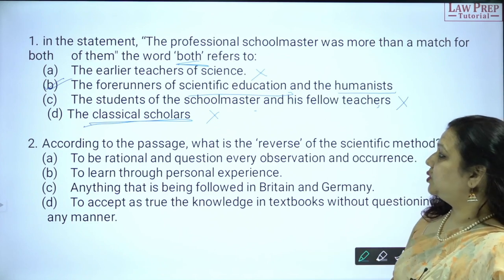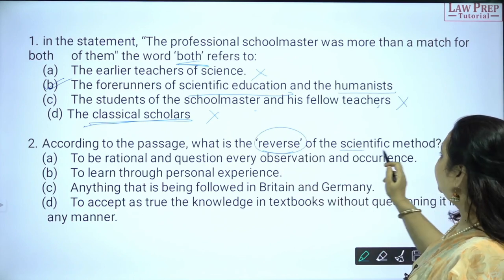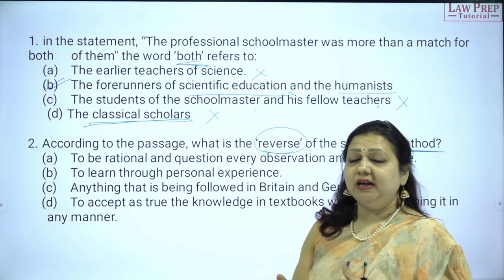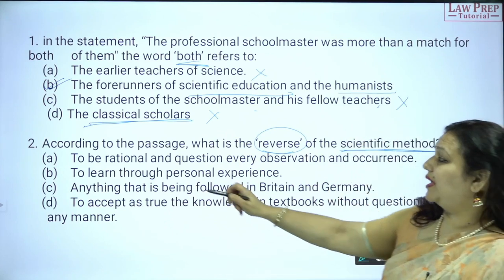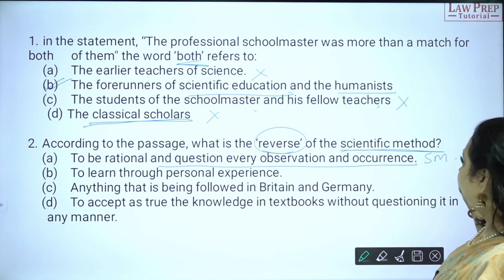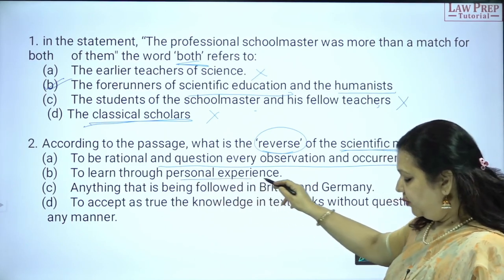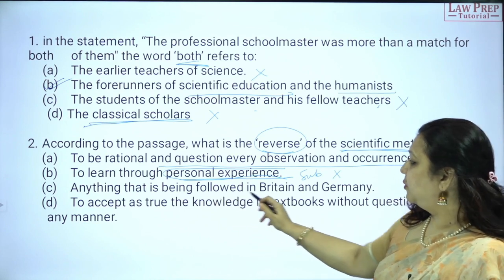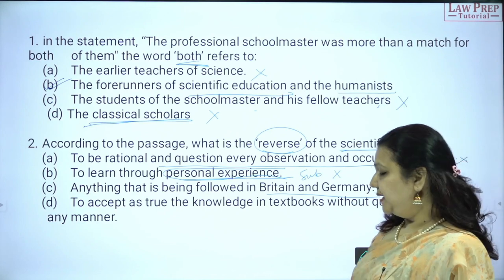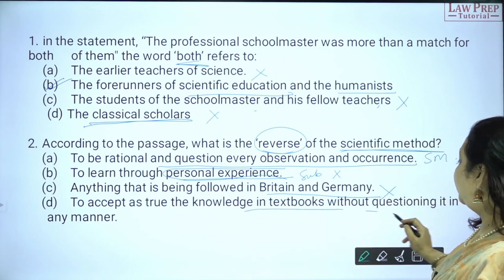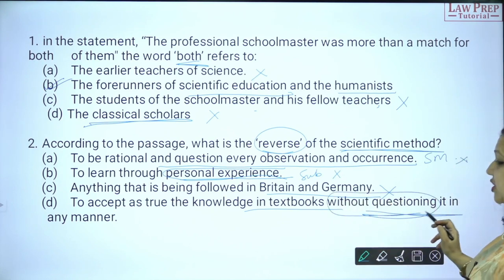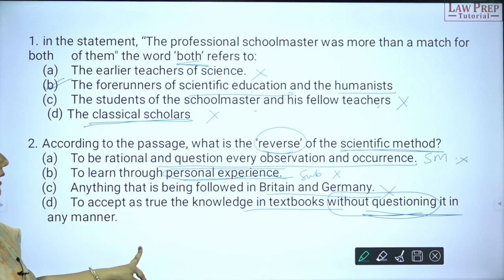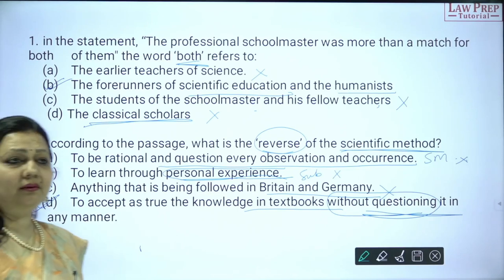Moving to the second question: what is the reverse of the scientific method? Scientific method is based on cause-effect relationships, rational thinking — there is a reason for every action. Option A — 'to be rational and question every observation' — is scientific method itself, not the reverse. 'To learn through personal experience' is subjective in nature. Nothing mentioned about Britain and Germany specifically as a method. The correct answer is: 'to accept as true the knowledge in textbooks without questioning' — if you take everything written in books as correct without questioning, that is the reverse of scientific method.